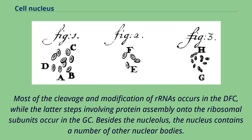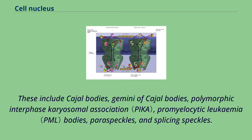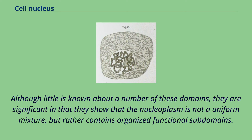Besides the nucleolus, the nucleus contains a number of other nuclear bodies. These include Cajal bodies, Gemini of Cajal bodies, polymorphic interphase karyosomal association, promyelocytic leukemia bodies, paraspeckles, and splicing speckles. Although little is known about a number of these domains, they are significant in that they show that the nucleoplasm is not a uniform mixture, but rather contains organized functional subdomains.